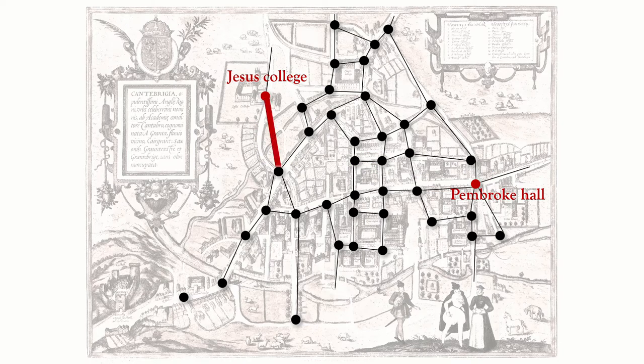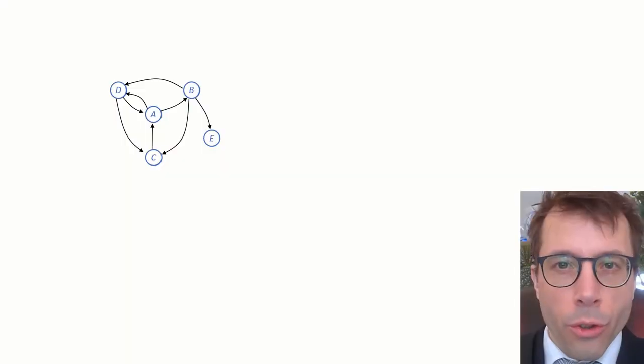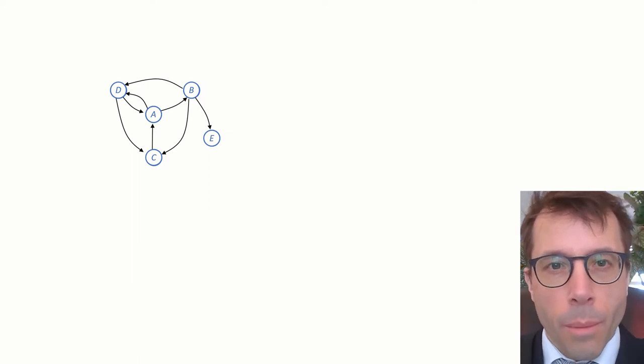What we'll look at in this video is an algorithm called breadth-first search, which is for finding a shortest path between two vertices, meaning the smallest possible number of edges. The basic idea is very simple. Suppose we've got a graph like this one and we want to find the shortest path from A to some other vertex.